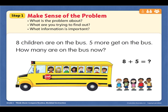Now the next thing we need to find out is what are you trying to find out? How many children are on the bus now? We need to find out how many children are on the bus. And the last thing we need to know is what is the important information? Sophia, to solve this problem, what is the important information we need to know? There's eight children on the bus and five more get on. So the numbers are eight and five — very good Sophia, give me a high five!